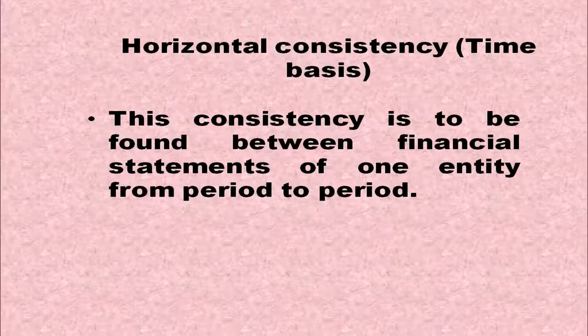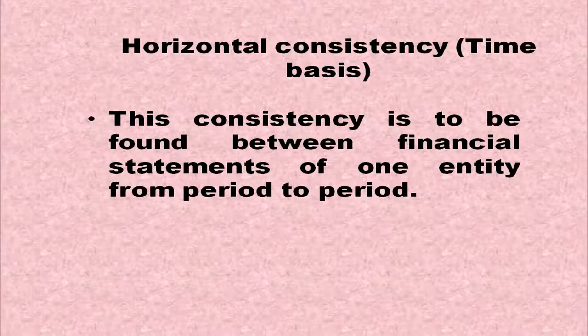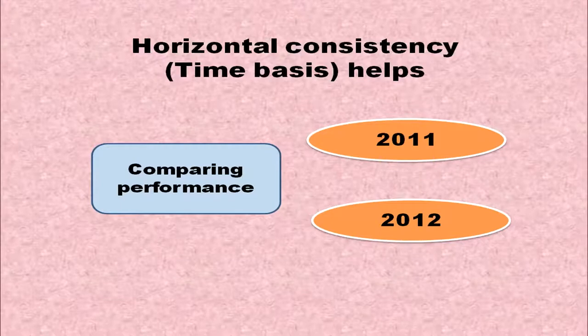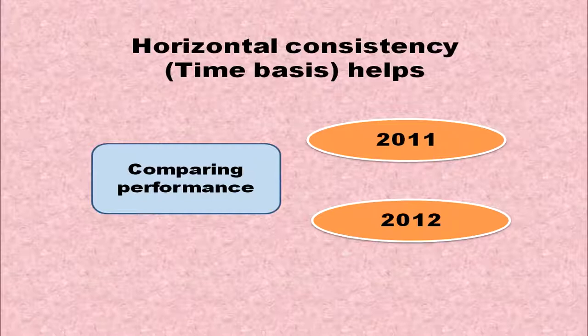Horizontal Consistency is found between financial statements of one entity from one period to another period. It helps in comparing the performance of different years — for example, comparing the performance of 2011 and 2012.